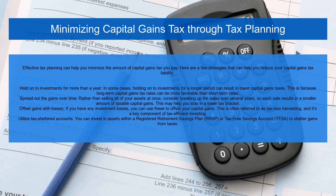Second, spread out the gains over time. Rather than selling all of your assets at once, consider breaking up the sales over several years so each sale results in a smaller amount of taxable capital gains. This may help you stay in a lower tax bracket.